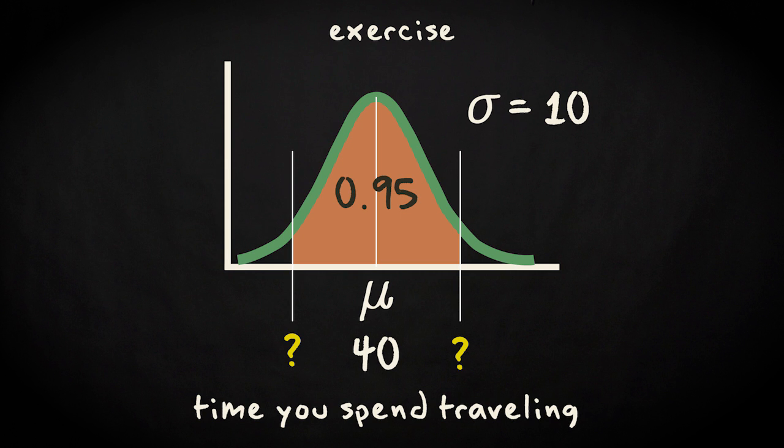Right, you know that 95% of the cases should lay in the interval from the mean minus 2 times sigma to the mean plus 2 times sigma. In this case, that's from 40 minus 20 up to 40 plus 20, which is 20 to 60 minutes.